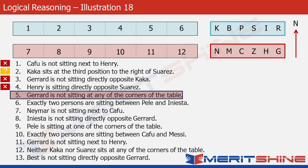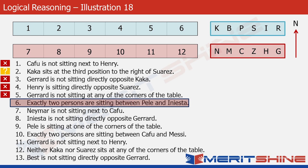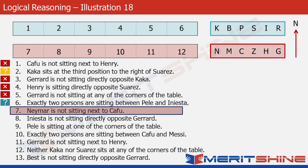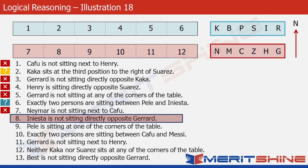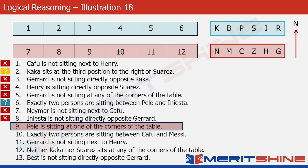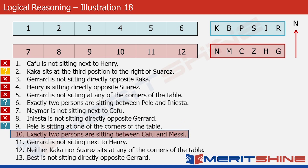Statement 5: Gerard is not sitting at any of the corners — again multiple possibilities, not useful now. Statement 6: Exactly two persons are sitting between Pele and Iniesta — multiple possibilities, and we don't know who is on the left and who is on the right, so slightly more complicated than statement 2. Statement 7: Neymar is not sitting next to Kafu — again negative. Statement 8: Iniesta is not sitting directly opposite Gerard — again negative. Statement 9: Pele is sitting at one of the corners of the table — that tells us something, but still 4 possibilities. If we combine this with statement 6, it might give us something. Statement 10: Exactly two persons are sitting between Kafu and Messi — again similar to statement 6.